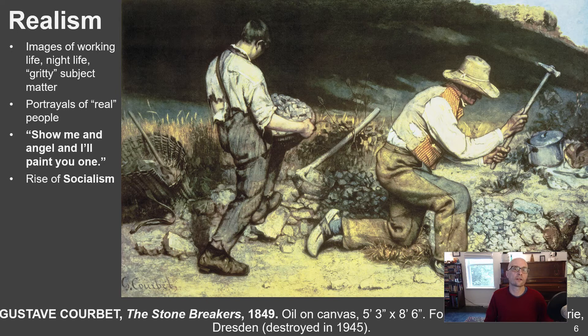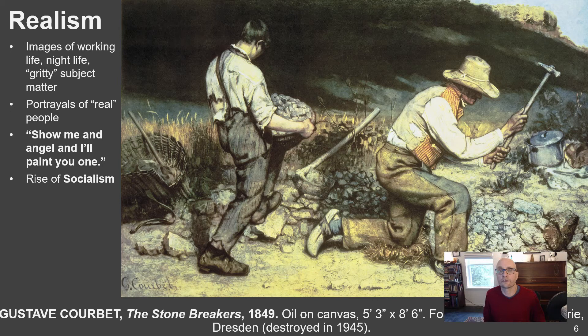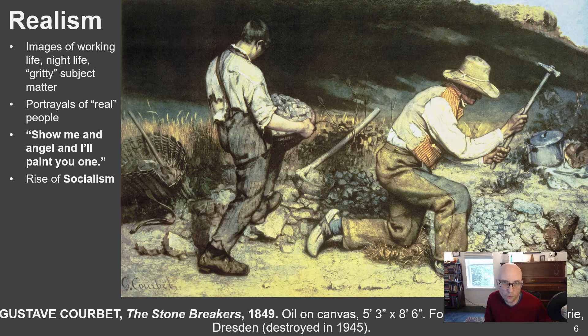This was the era of industrialization, mass production, and factories, and many workers were experiencing very poor treatment. Socialism was a field of political thought that was very appealing to workers who felt they could gain some power through it. Courbet was reflecting these concerns, and people were horrified by this painting when it was shown at the Grand Salon, because it took the subject matter of people often forgotten or ignored in society and blew them up on a heroic scale.